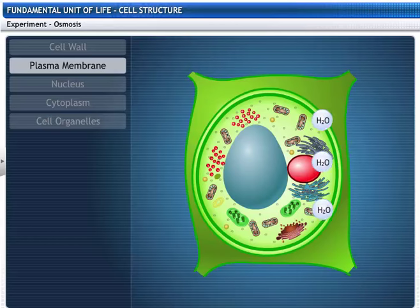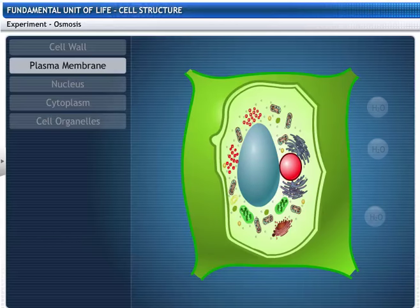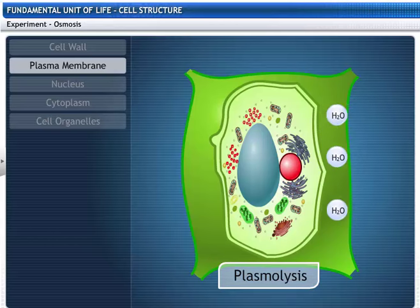When the cell loses water through osmosis, the cell contents shrink away from the cell wall. This is known as plasmolysis.